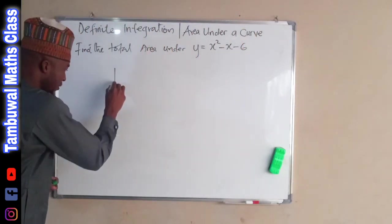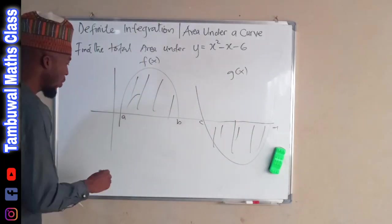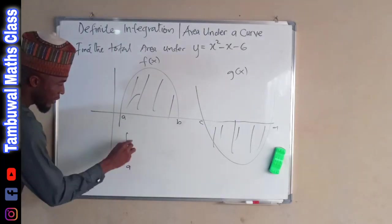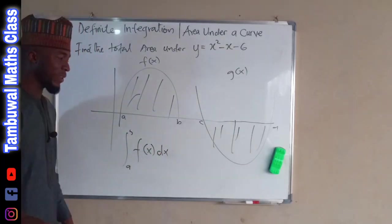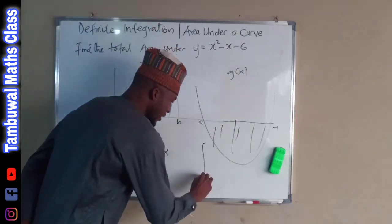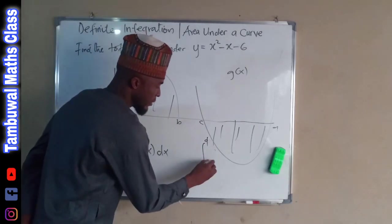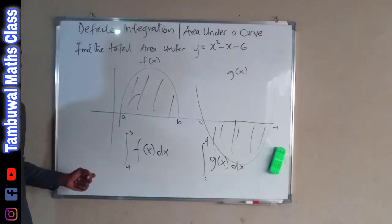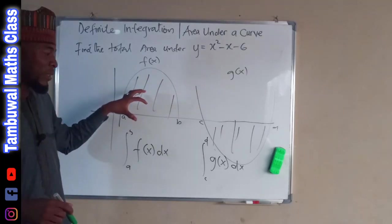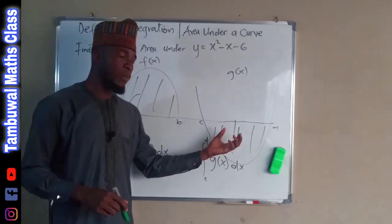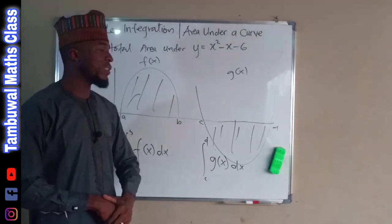Suppose we have curves like this. To find the area under this curve, we are going to take the integral from a to b of the function f of x with respect to x. And likewise, to get this area, we are going to take the integral from c to d of the function g of x with respect to x. But there is something you need to observe here: the area here will appear positive, but since this curve is below the x-axis, it is going to appear negative. So we don't have a negative area — therefore, we have to take the absolute value of the value we got.